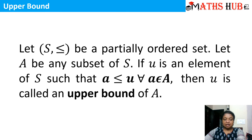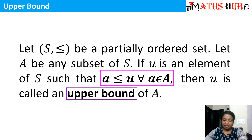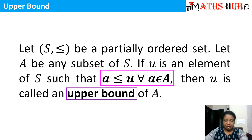Let's see the definition of an upper bound. If (S, ≤) is a partially ordered set, then let A be any subset of S. If u is an element of S such that a ≤ u for all a belonging to A, then u is called an upper bound of A. In the last video I talked about maximal, maximum, minimal and minimum elements.